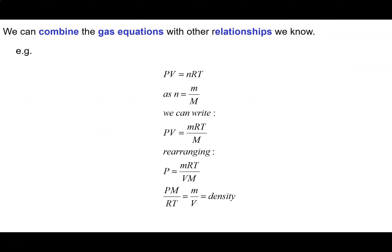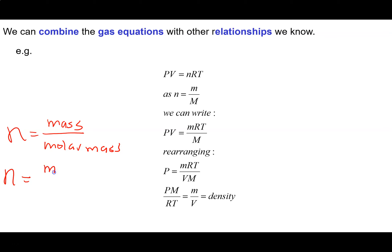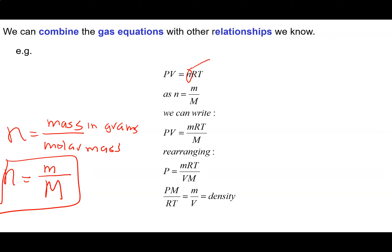We can also combine other equations with the ideal gas law. The number of moles equals mass divided by molar mass — lowercase m for mass in grams, uppercase M for molar mass. So we can replace N in the ideal gas law with little m over big M, which gives us a new expression.